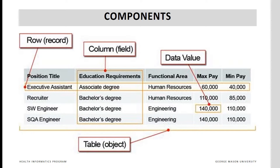The first row is about executive assistants; they get paid 60,000 maximum pay. The individual cell values in the table are called data. Data can be numbers or text. It can be dates, integers, decimal, or a web URL. Data can also be a picture or a link to a picture.